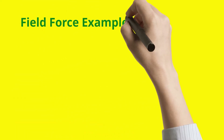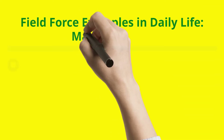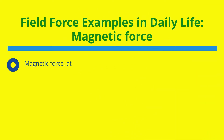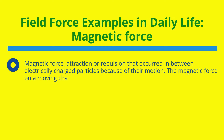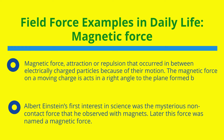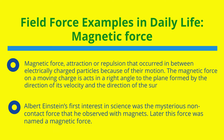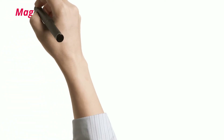Magnetic force is the attraction or repulsion that occurs between electrically charged particles because of their motion. The magnetic force on a moving charge acts at a right angle to the plane formed by the direction of its velocity and the surrounding magnetic field. Albert Einstein's first interest in science was the mysterious non-contact force he observed with magnets, which was later named magnetic force.